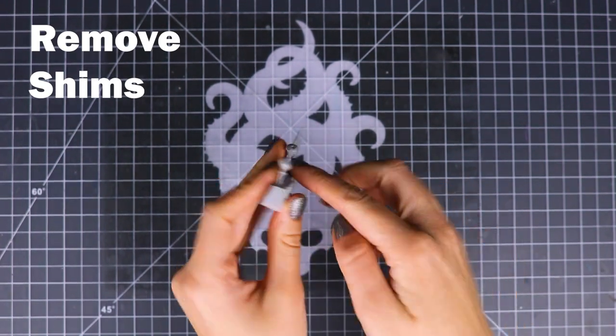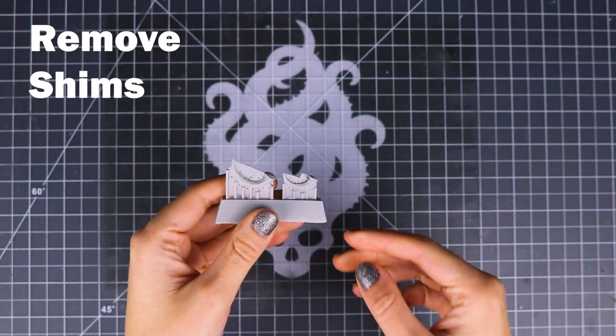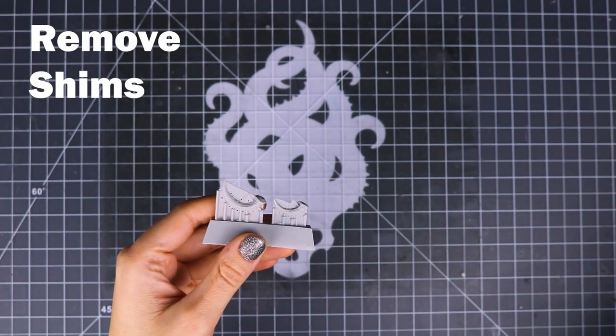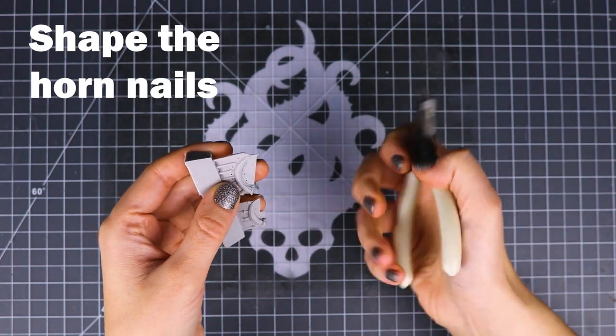Additionally on the horns there are some nails which would not be possible without these shims. So it is a little extra work to remove them but it does keep a really nice look for the nails.